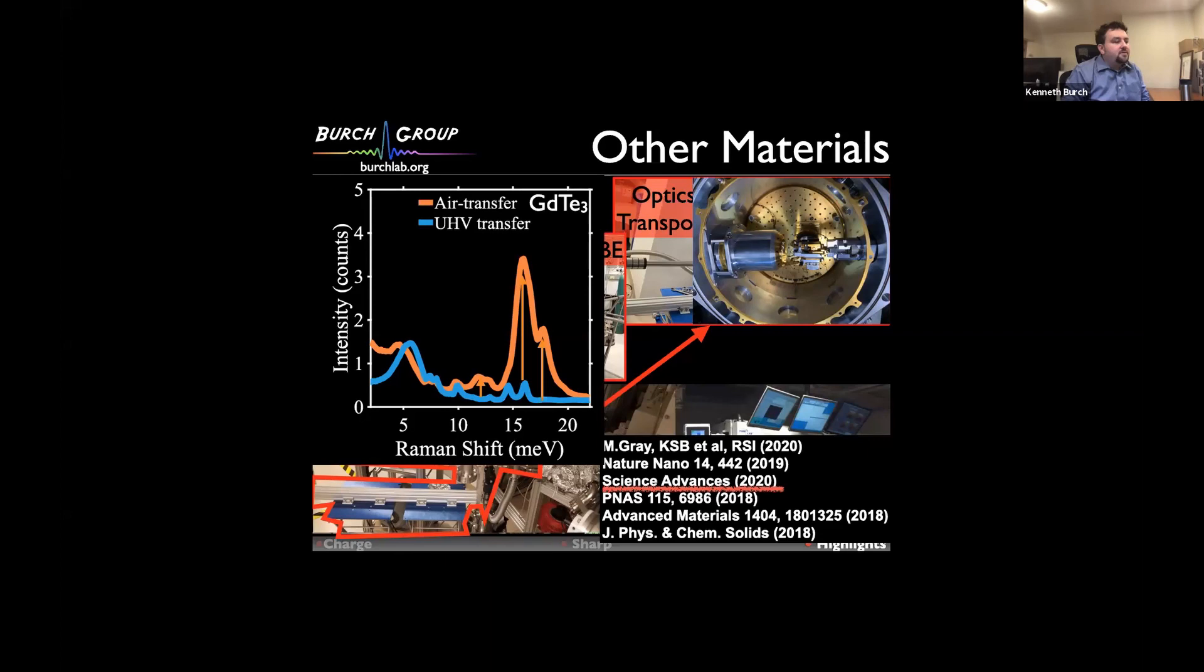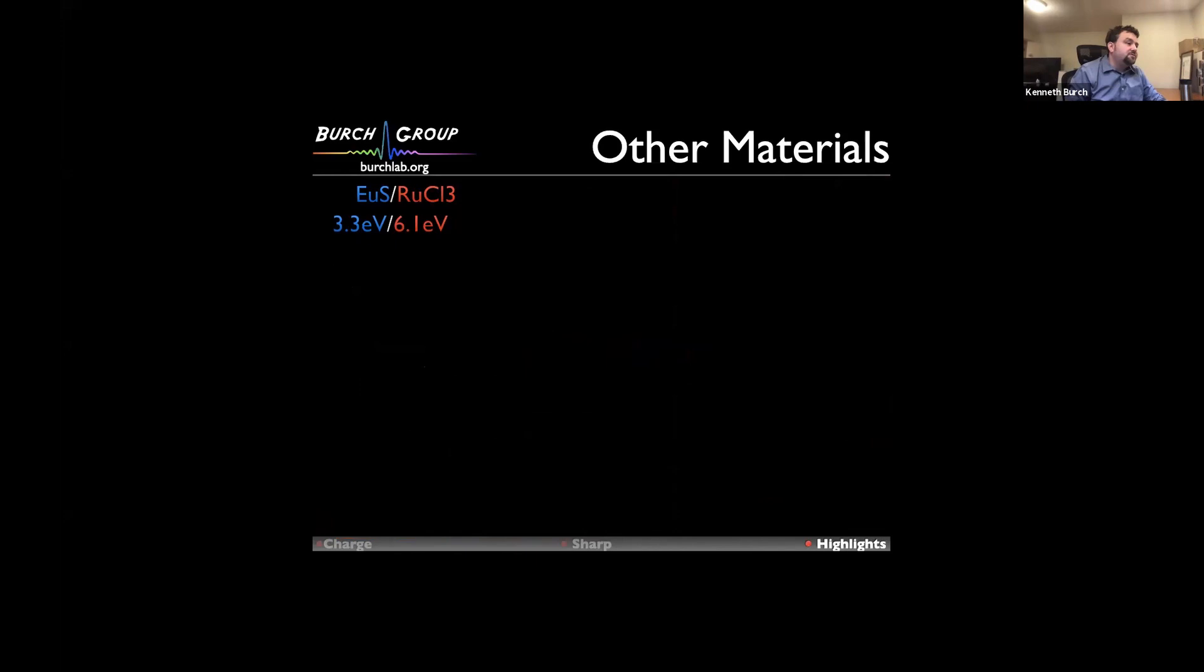Returning to ruthenium chloride, one of the things we wanted to try is can this only work for 2D materials? We worked with Jagadeesh Moodera's group who grew europium sulfide on top of the ruthenium chloride by MBE. We were quite interested to try this because it has a work function of 3.3 EV, quite a bit lower than the ruthenium chloride. Indeed, europium sulfide itself is a nice magnetic semiconductor. If you look at the bulk, it has a resistance of about 2×10^-2 ohm centimeters. However, what we found is for our thin films, the europium sulfide, when it's grown with ruthenium chloride, has a four-orders of magnitude reduction in the resistance, consistent with being heavily doped.